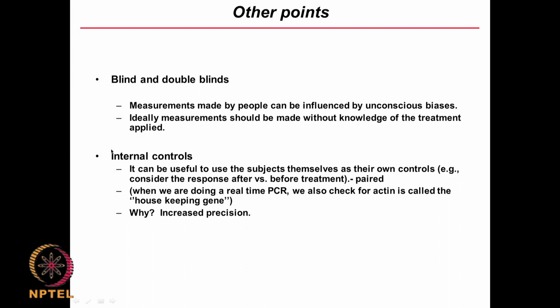Internal controls are very important. Sometimes we use the subjects themselves as their own controls — for example, the paired t-test. In real-time PCR in molecular biology, we look at a housekeeping gene like actin and compare the up-regulation or down-regulation of other genes with respect to it. That is an internal control; it is very important because it normalizes the variations we see.